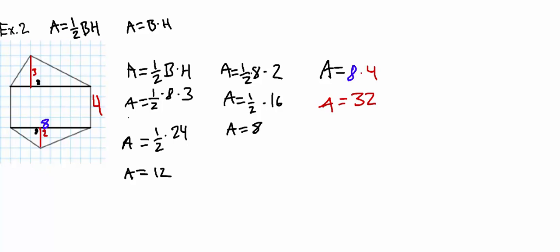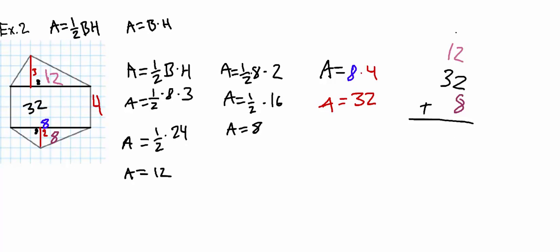So, to show what this looks like: inside the rectangle is 32 — that's all the little unit squares put together. For the top triangle, you have 12, and for the bottom one, you have 8. Now we add them all up: 12 plus 32 plus 8 equals 52. Remember, this is area, so it's units squared. Your final answer is 52 units squared.